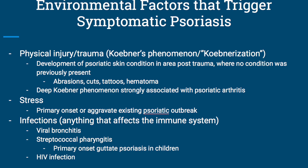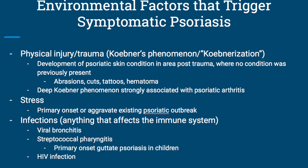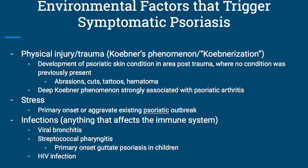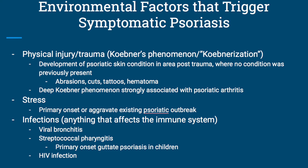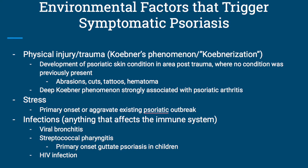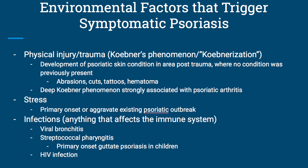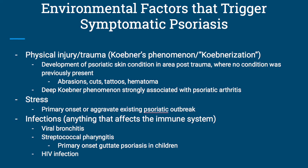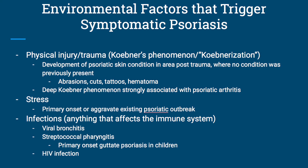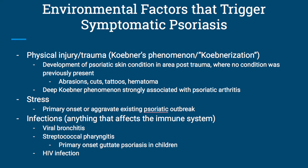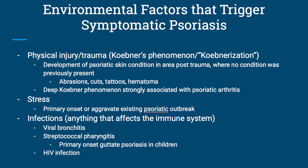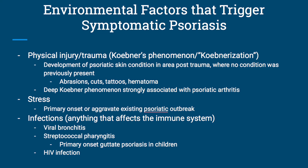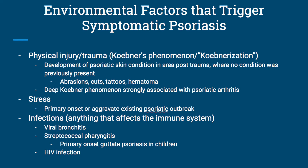Stress can also cause psoriatic outbreaks. These can be primary outbreaks, or it can actually aggravate an existing outbreak. Also, anything that affects the immune system — any kind of infection. Some of the most associated include viral bronchitis, streptococcal pharyngitis, and HIV infection. Streptococcal pharyngitis is often most strongly associated with a primary onset of guttate psoriasis in young children.